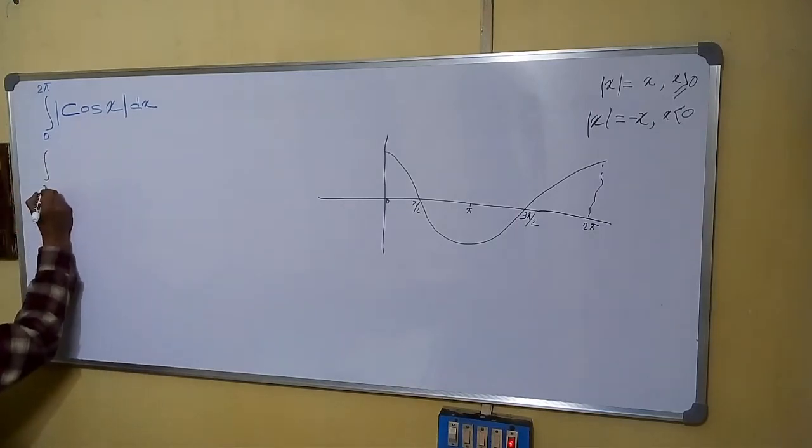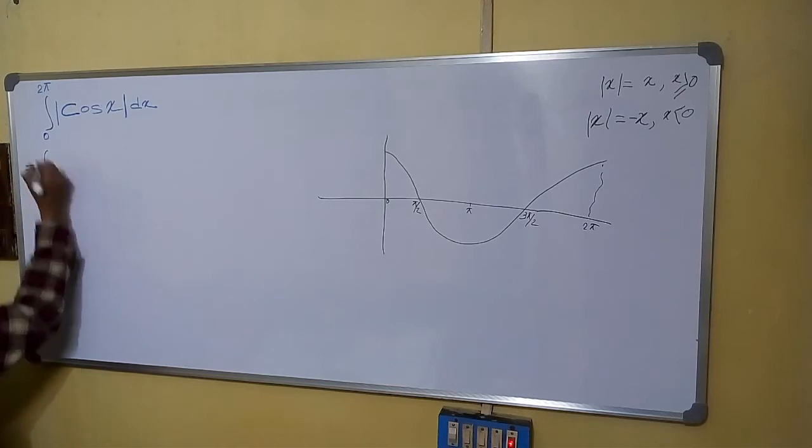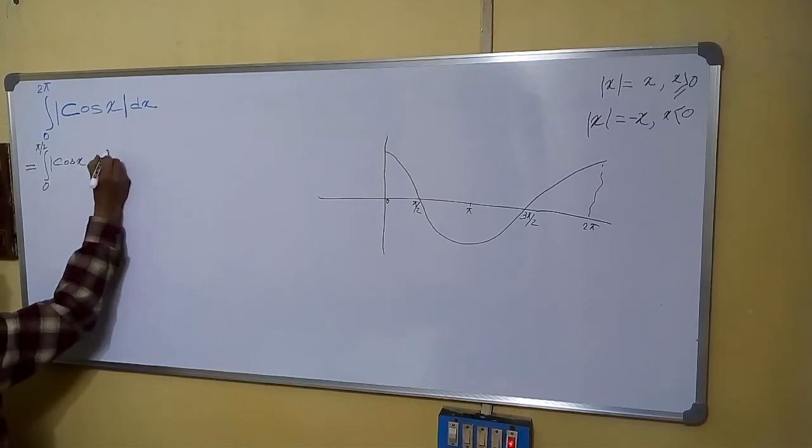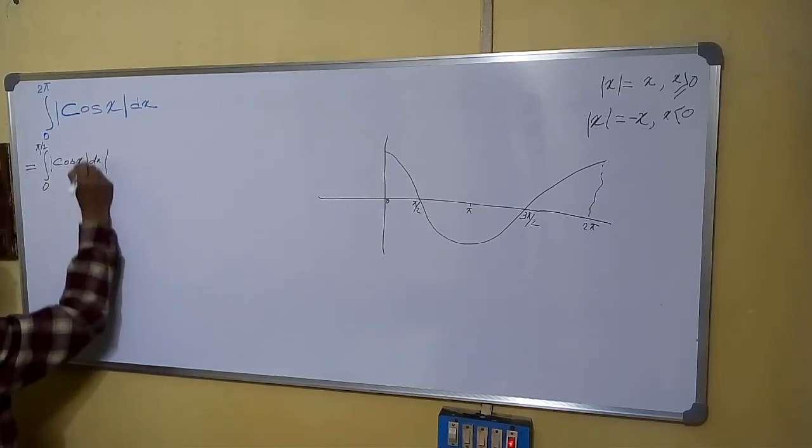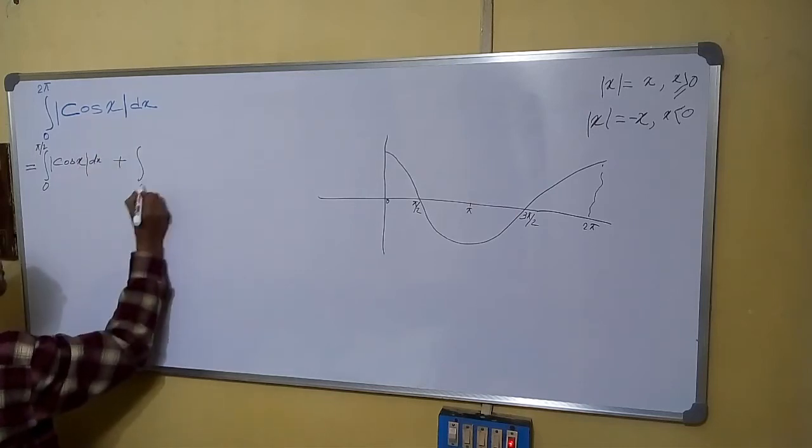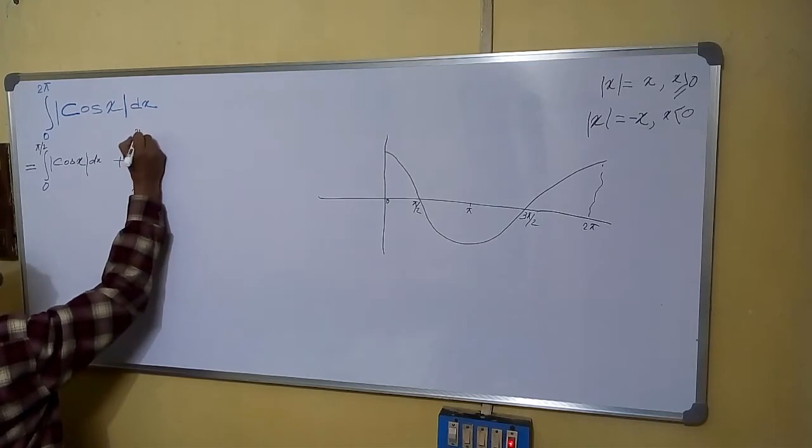See, always follow this type. This is equal to 0 to pi by 2, mod of cos x dx, plus pi by 2 to 3 pi by 2, mod of cos x dx.